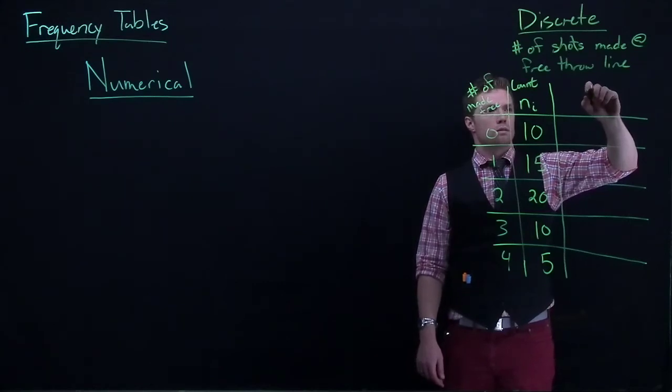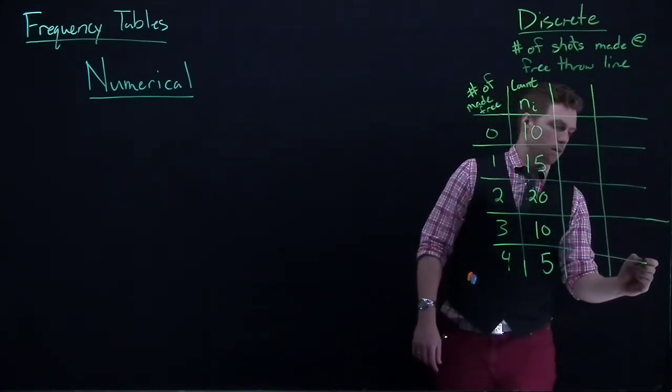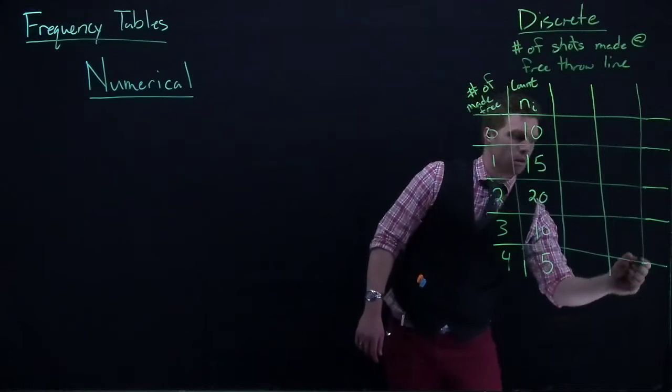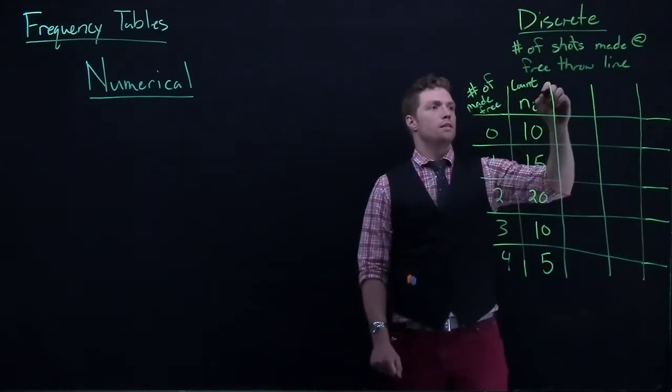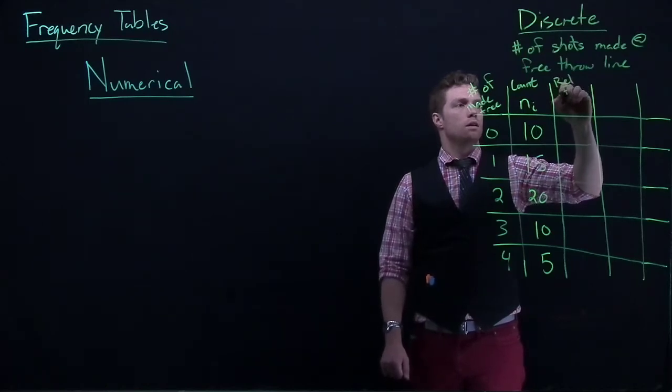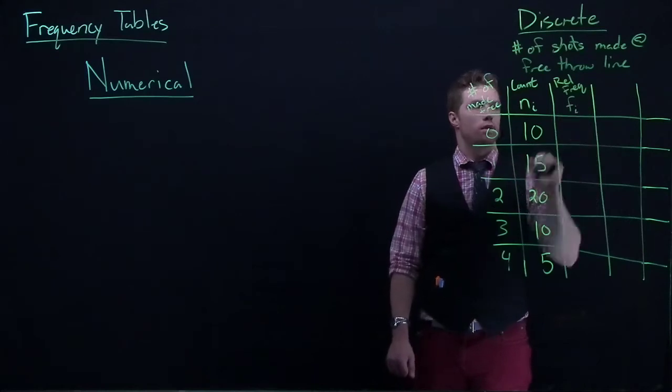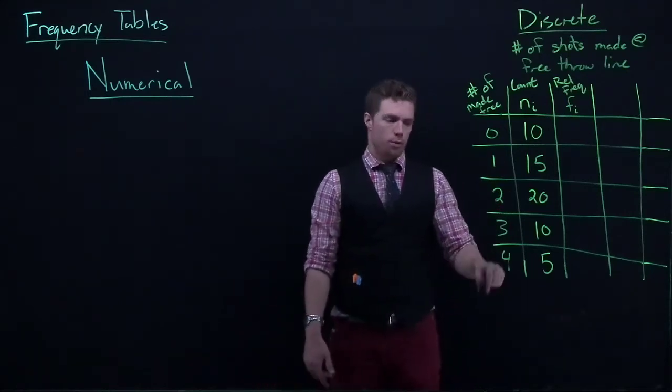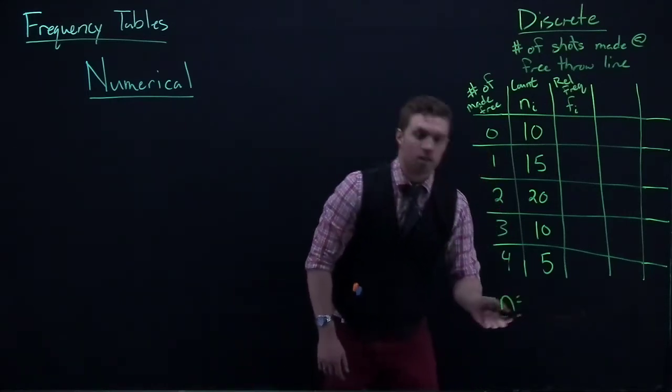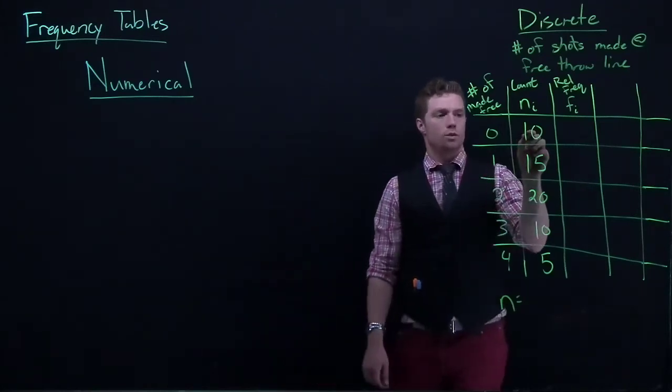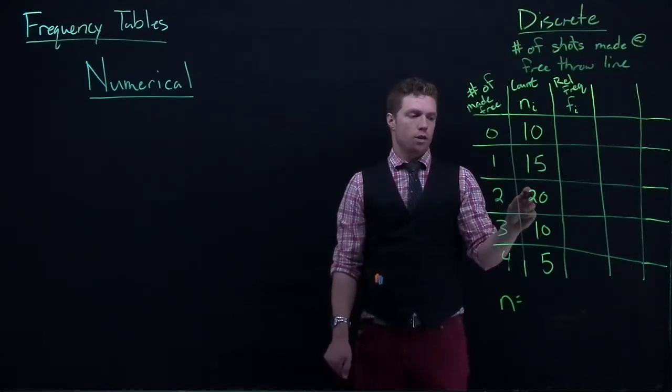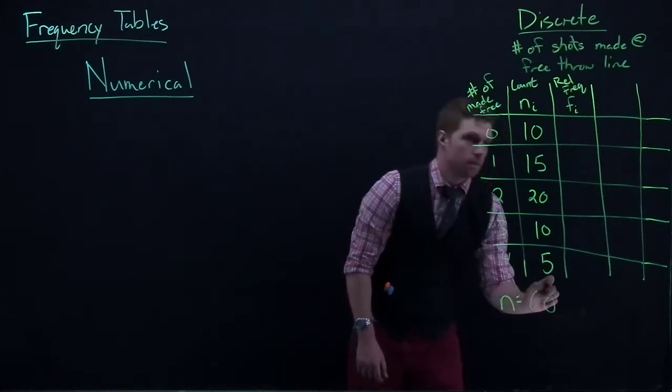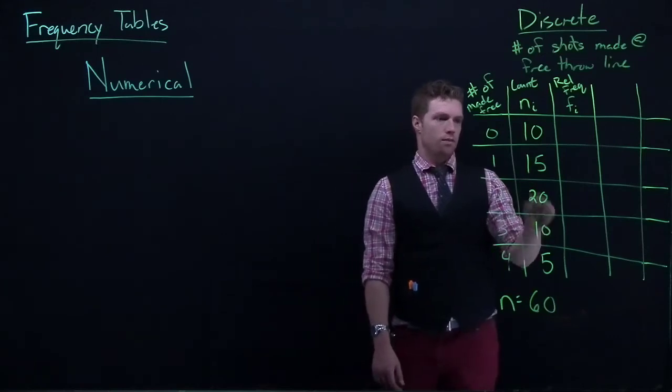The next column over is our relative frequency. We're going to put this as little f sub i, or it's how often relatively do we see these things happening. So what we need to know is the sample size. First of all, let's look at n. Let's see how many games this player actually played in. So we can do 10 plus 15 gives us 25, plus 20 is 45, plus 10 is 55, plus 5 is 60.